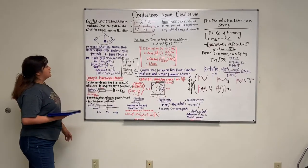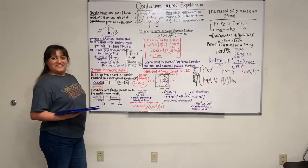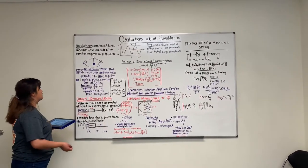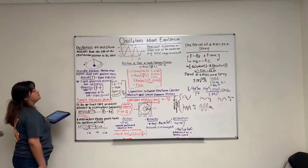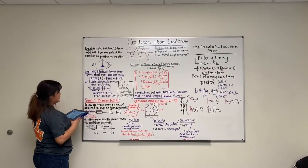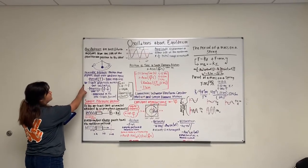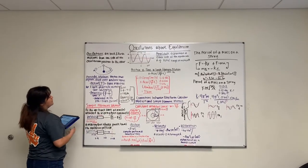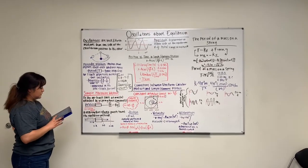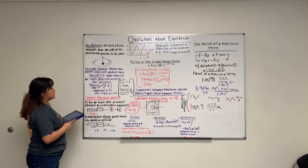Another type of measurement used in periodic motion is the frequency. Frequency is one over the time of the oscillation period. So basically, it's kind of like an inverse version of what period really means. Frequency's unit is s to the negative one power, and it is measured in Hertz, where one Hertz equals one cycle per second.